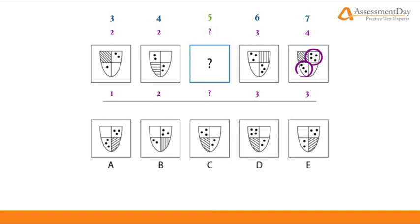Equally, they alternate corners from left to right. Therefore, we require a shield with a total of five dots where the dots are located in the bottom left and top right corners. There are two answers that fit this pattern, B and E.